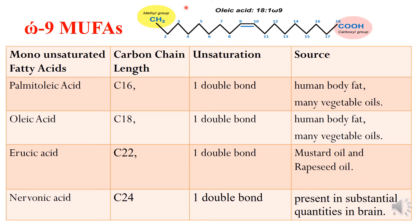Now you can see the structure of MUFA, that is oleic acid. You can see that the first double bond is at the ninth position from the methyl end, and therefore it is known as 18:1 omega-9. 18 stands for the carbon chain length, 1 stands for the unsaturation, and 9 stands for the position of the double bond, which is between the ninth and the tenth carbon.